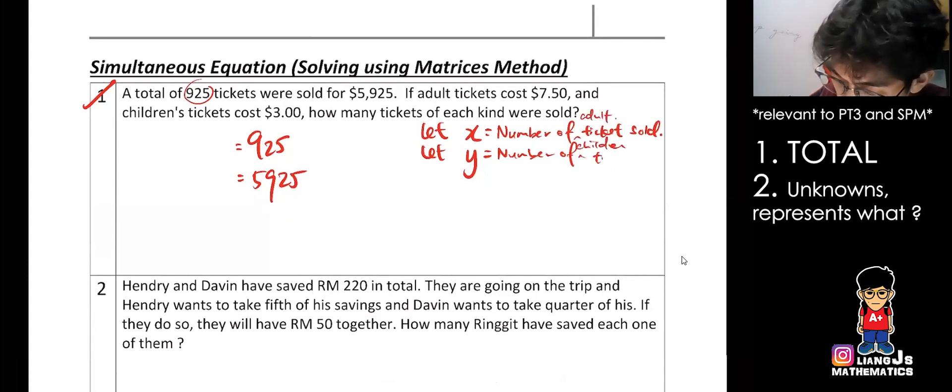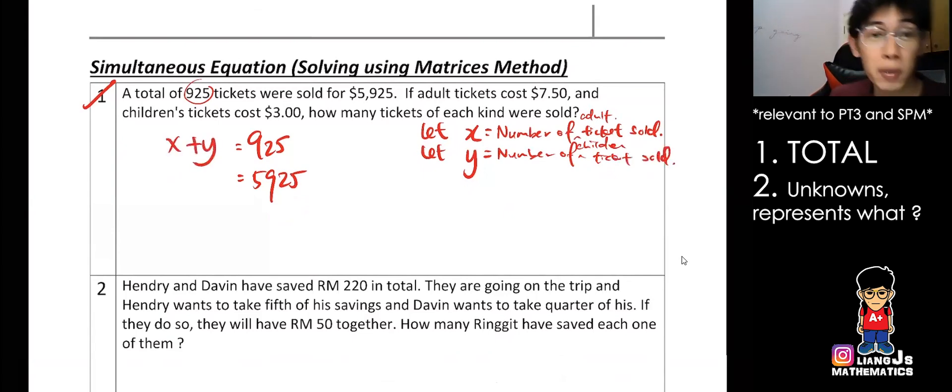So my first equation will be x plus y, because 925 is the number of tickets. Students might stay in the picture already, so I write the whole thing really. What for you to write so detailed? X and that's why like that. That's what I say, when you come to the hard one, you need to make sure you are very specific on the unknown, then you'll be able to clear it.